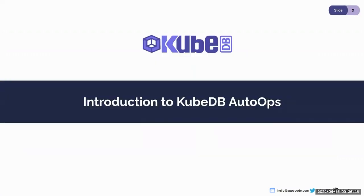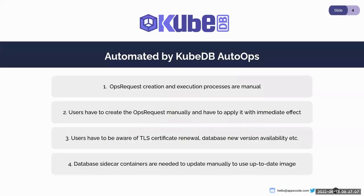Now let's talk about KubeDB Auto Ops. Auto Ops is an edition of technology or concept that performs tasks automatically or with minimal human assistance. Similarly, KubeDB Auto Ops is a concept focusing on automating the day-two lifecycle management for databases. Currently, KubeDB manages day-two lifecycle of databases via ops requests, but the ops request creation and execution processes are manual.